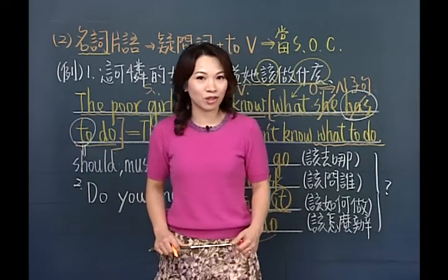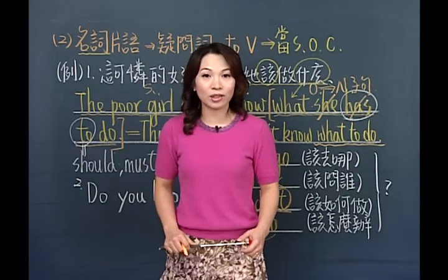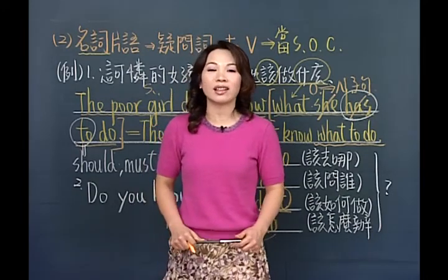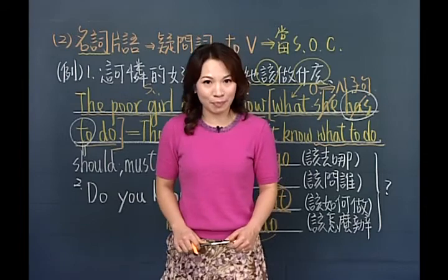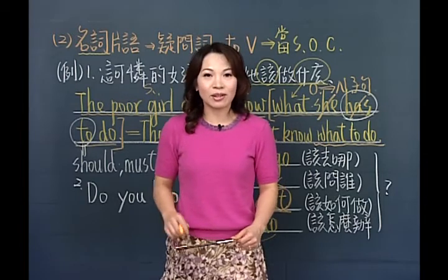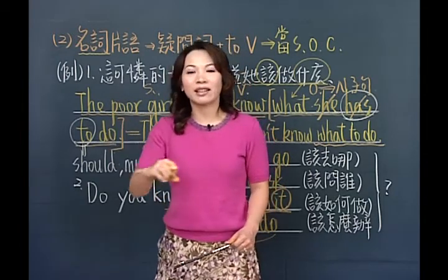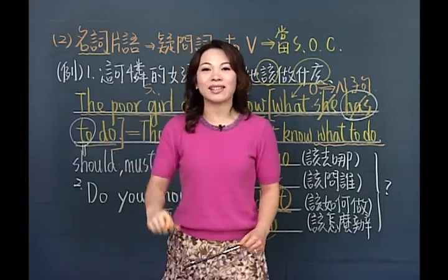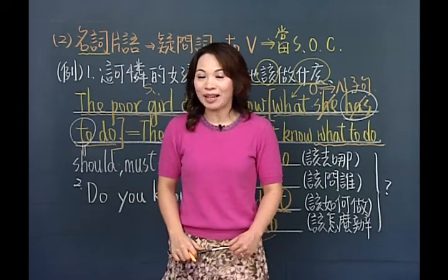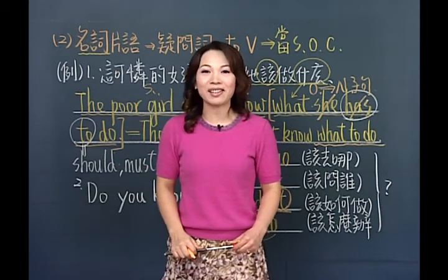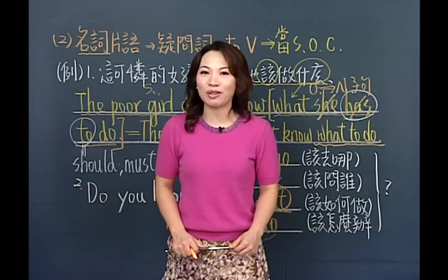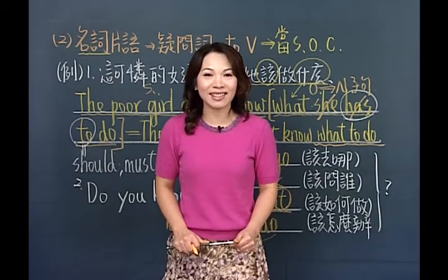听过谢老师的讲解之后，其实你直接记起来：what to do和how to do it都可以翻译成「该怎么办」的意思。中文讲到该怎么样，记得疑问词加上不定词这样的名词片语就对了。好在这里我们要稍微休息一下，还有很重要的所谓的间接问句的用法，交给同学休息一下，记得要赶快回来，待会见拜拜！